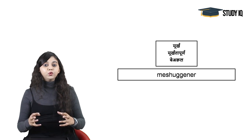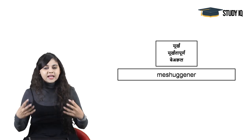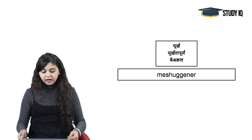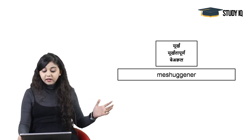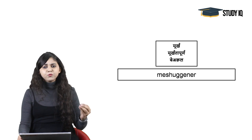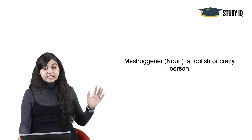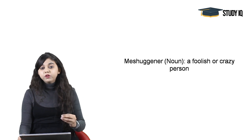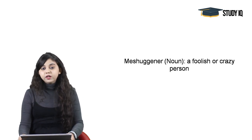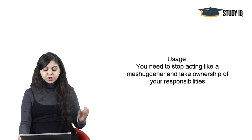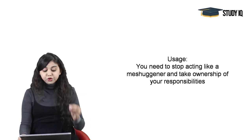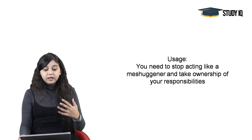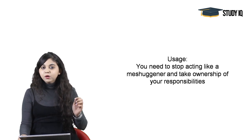Moving on to the next word: Mishuggener. Mishuggener ka arth hota hai a foolish person — ek aisa vyakti jo bahut foolish hai, bahut stupid hai, moorkhta purn vyavhar ho jis ka. This noun's exact meaning is a foolish or crazy person. Usage: You need to stop acting like a mishuggener and take ownership of your responsibilities — aapko moorkhta purna vyavhar khatam karna hoga.